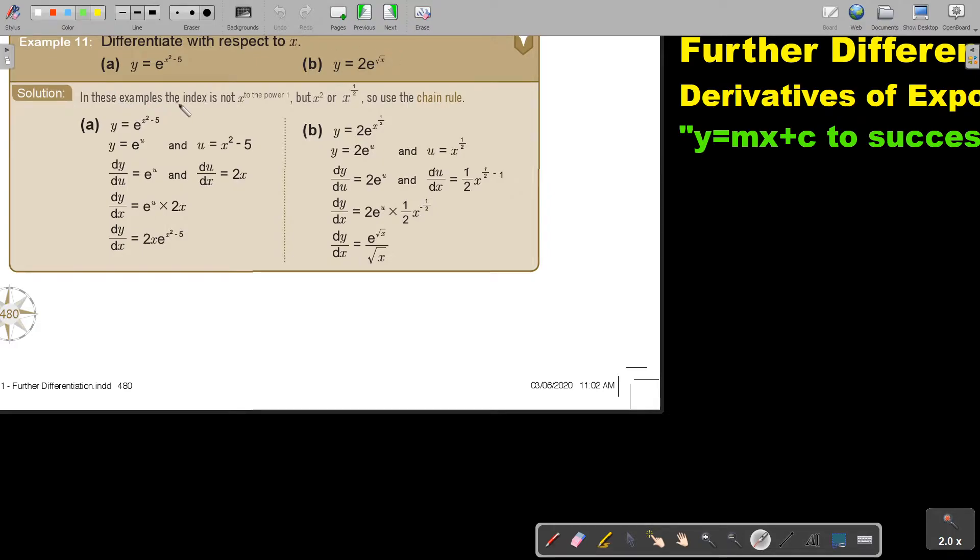So in these examples, the index is not like the previous x to the power of 1 but it's x to the power of 2 or it's x to the power of 1 half. So we use the chain rule. Now how do we do that?